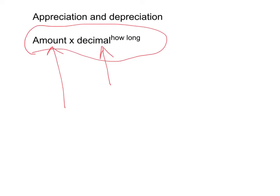And you put that to the power of how long. So if it was three weeks, you would put it to the power of three. If it was five years, you would put it to the power of five. And then you use your calculator to work that out, and sometimes you have to round the answer as well. So here's a couple of examples.